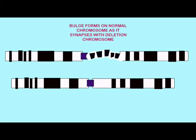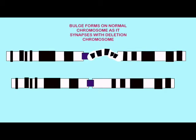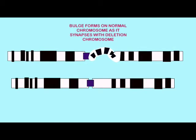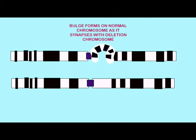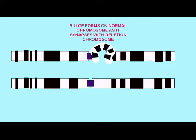one may see bulges forming from the tetrads as the area which is not paired bulges outward so that the remaining sections can pair with corresponding regions on the homologous chromosome.